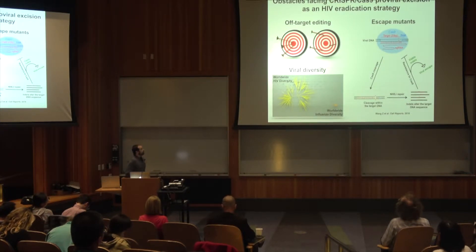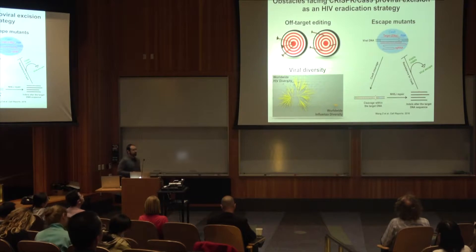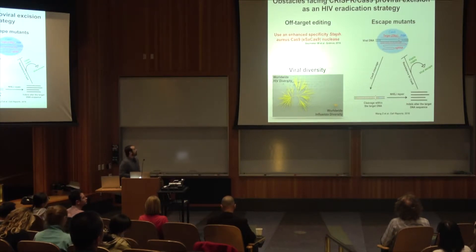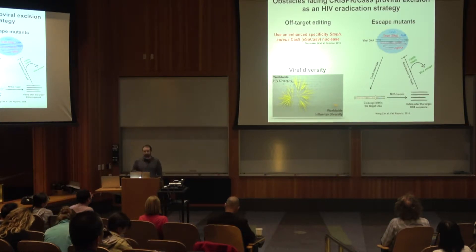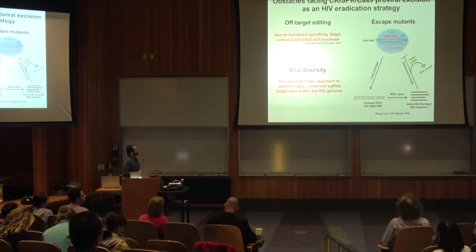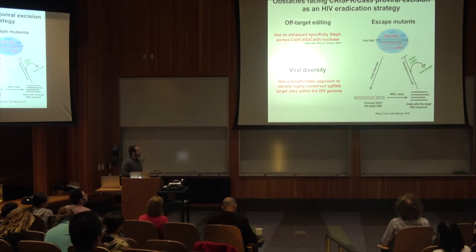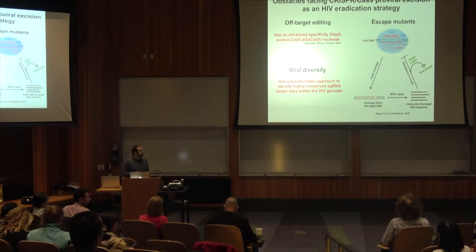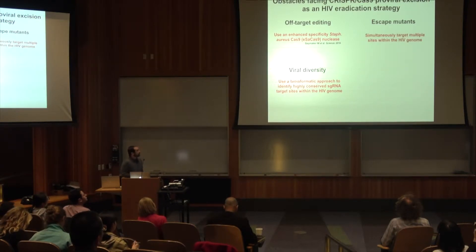To overcome these three problems, we are using the following strategy: we're using an enhanced specificity Staph aureus Cas9 nuclease; we're using a bioinformatics approach to identify highly conserved guide RNA target sites within the HIV genome; and we want to target multiple sites simultaneously.